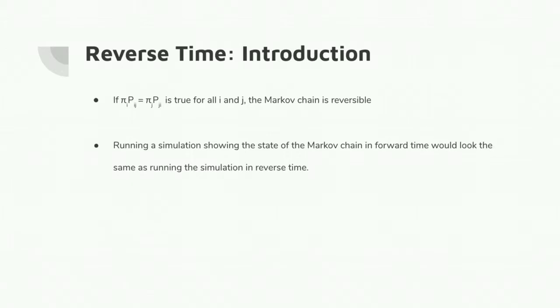One way to know is with this formula: if pi sub i of transition matrix P with ij is equal to the pi of j whose transition matrix is ji, if that formula is true for all i and j, then the Markov chain is reversible. Our random walk is reversible. I believe all random walks are reversible when they are finite and non-absorbing and nice like ours was.